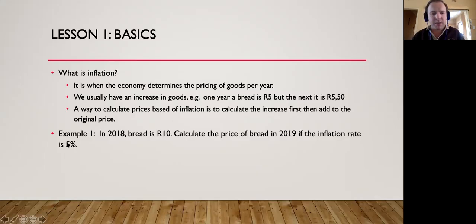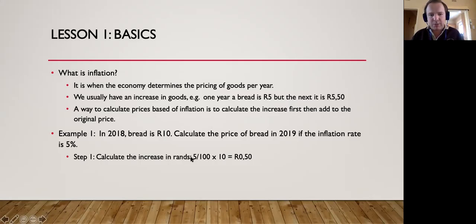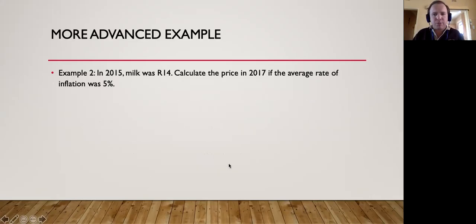Five percent of 10 rand is calculated as 5 over 100 times 10, which equals 50 cents. That 50 cents is the actual increase in rands. The price in 2019 will therefore be the original 10 rand plus the 50 cents, giving us R10.50.